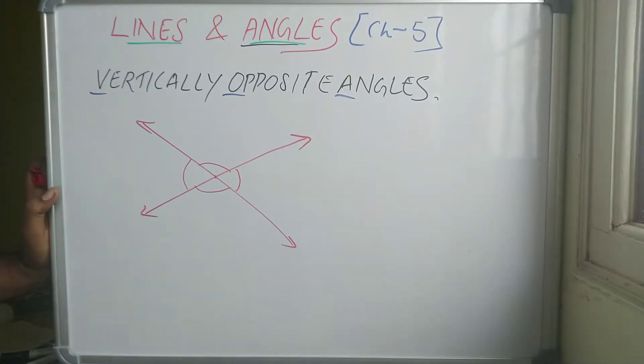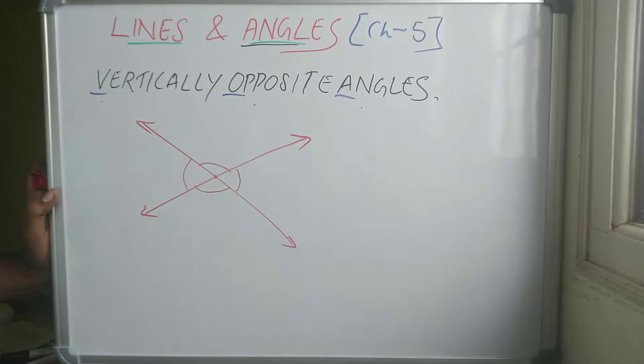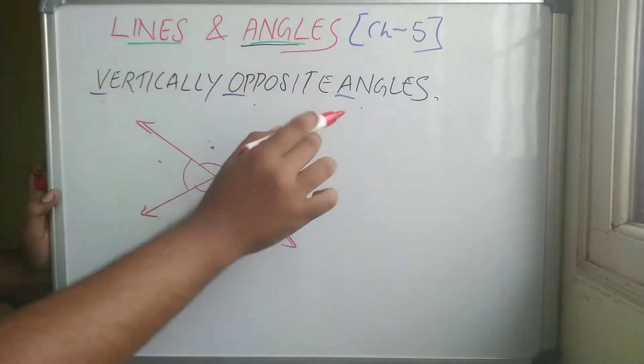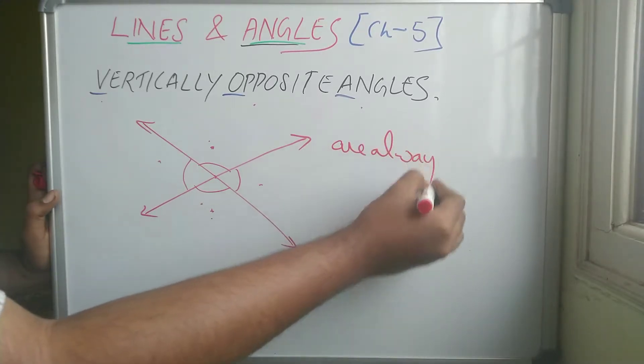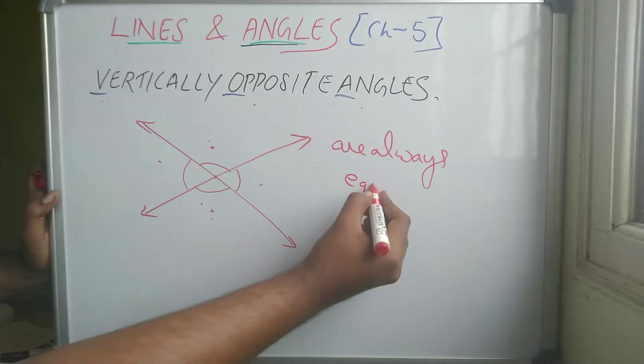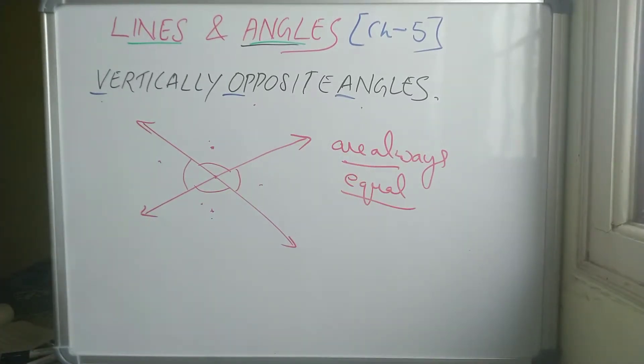So vertically opposite angles are always equal. So vertically opposite angles are always what? Equal.